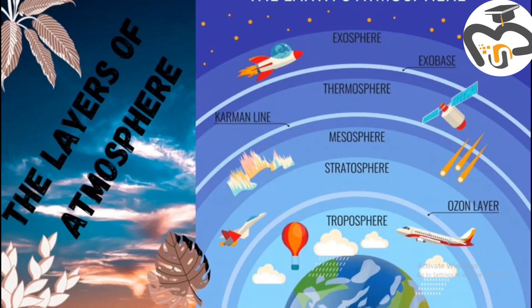The atmosphere has five layers. They are the troposphere, the stratosphere, the mesosphere, the thermosphere, and the exosphere. Each of those has a different role to play in the atmosphere. Let's go and see what they are.